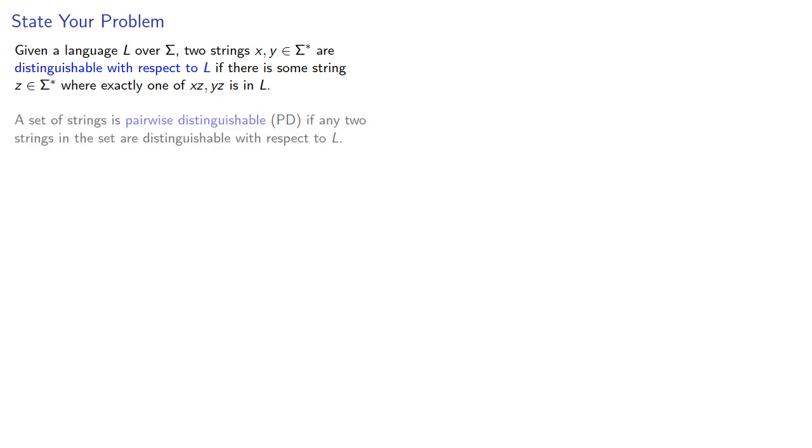A set of strings is pairwise distinguishable if any two strings in the set are distinguishable with respect to L. And if s is a set of n strings that are pairwise distinguishable, then a finite automaton that recognizes the language must have at least n states.